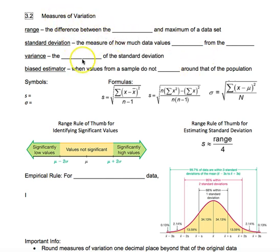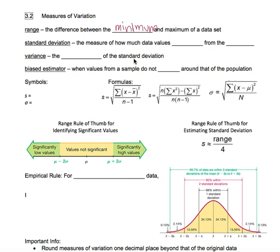The first measure of variation that most of you would already know is the range, which is the difference between the minimum and the maximum of a data set. Standard deviation is one that typically people do not know, and this is the measure of how much data values vary from the mean.